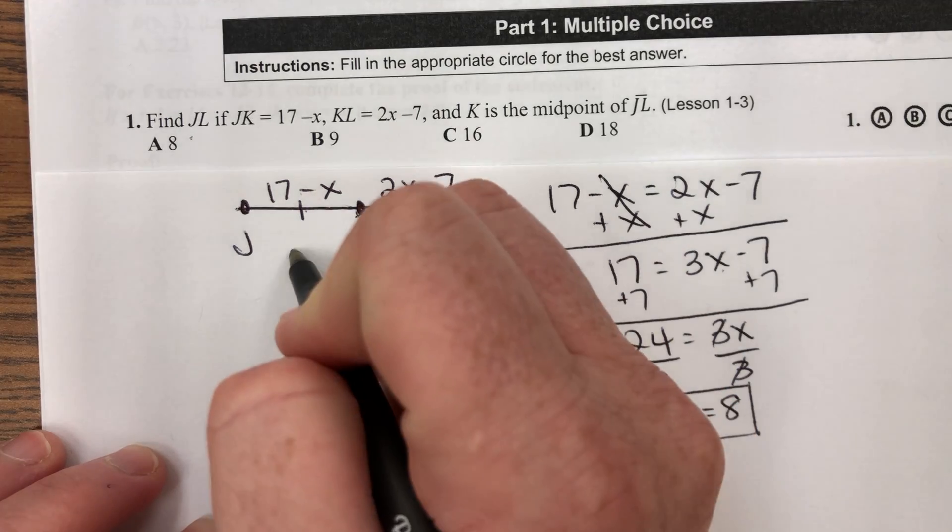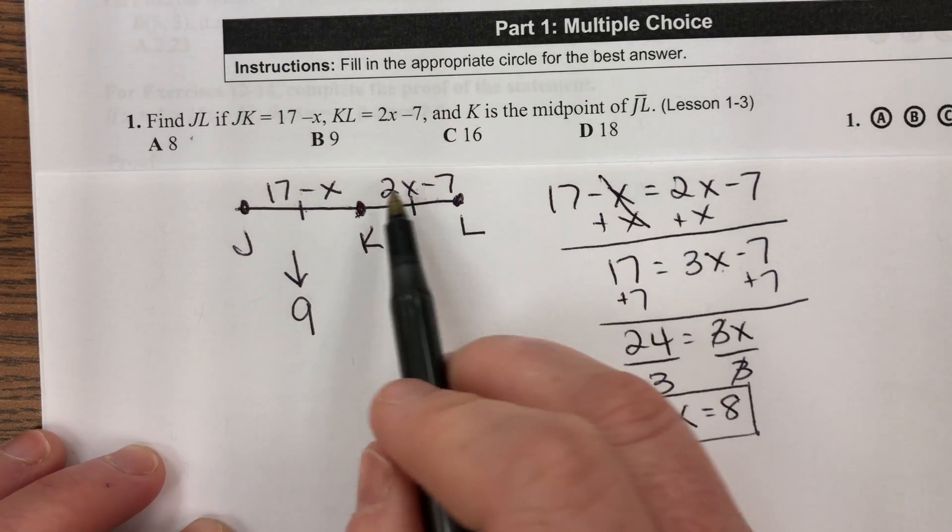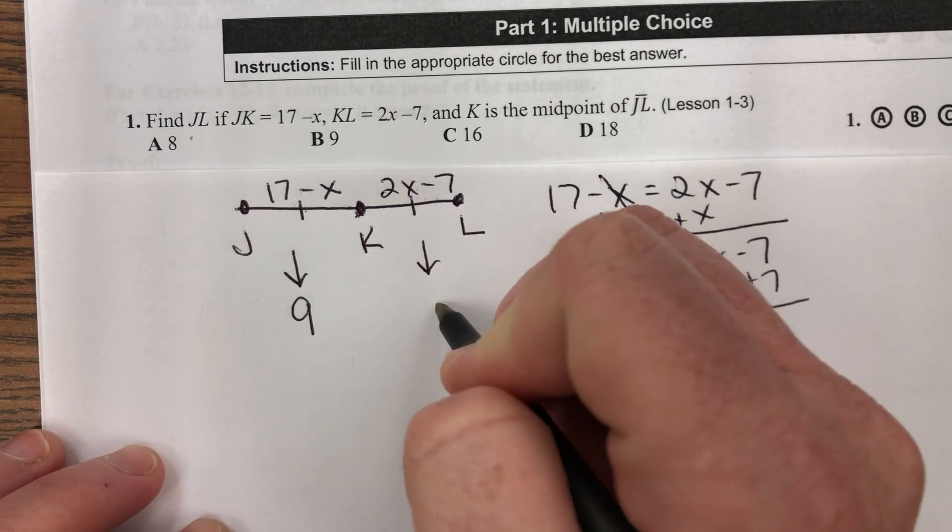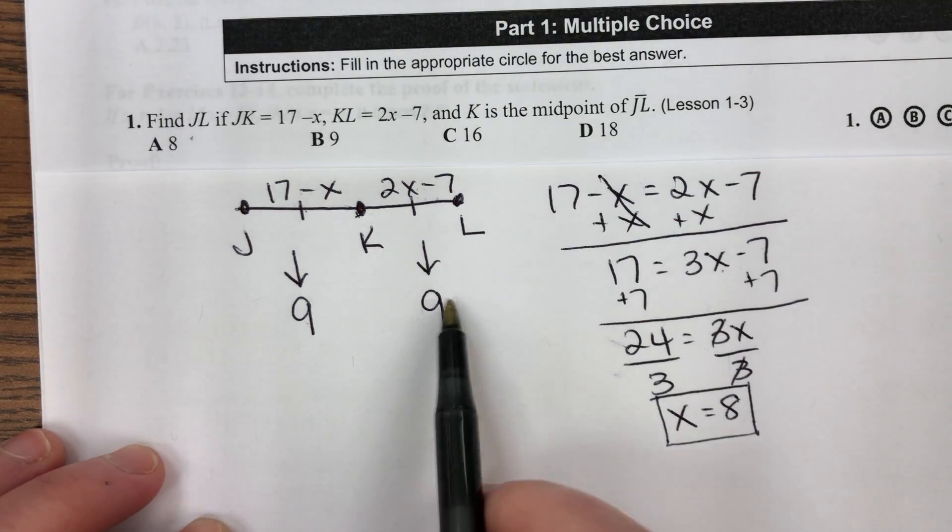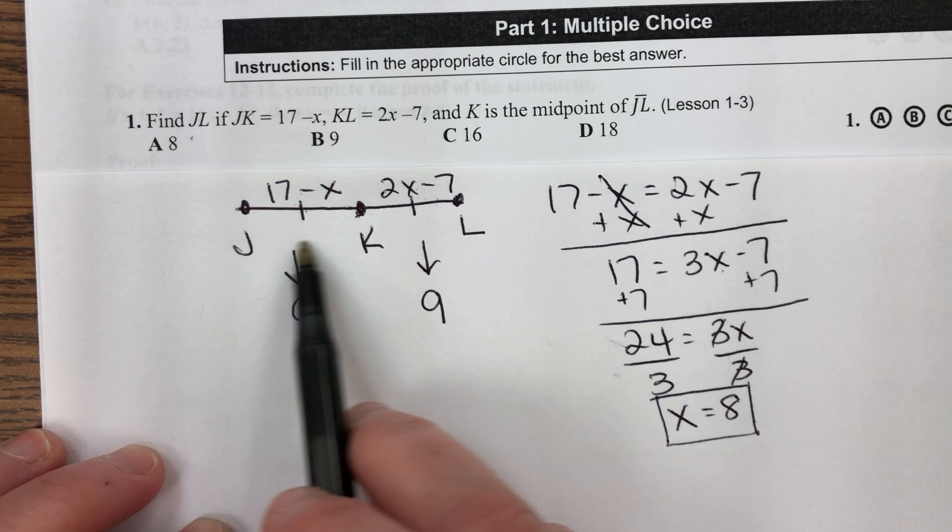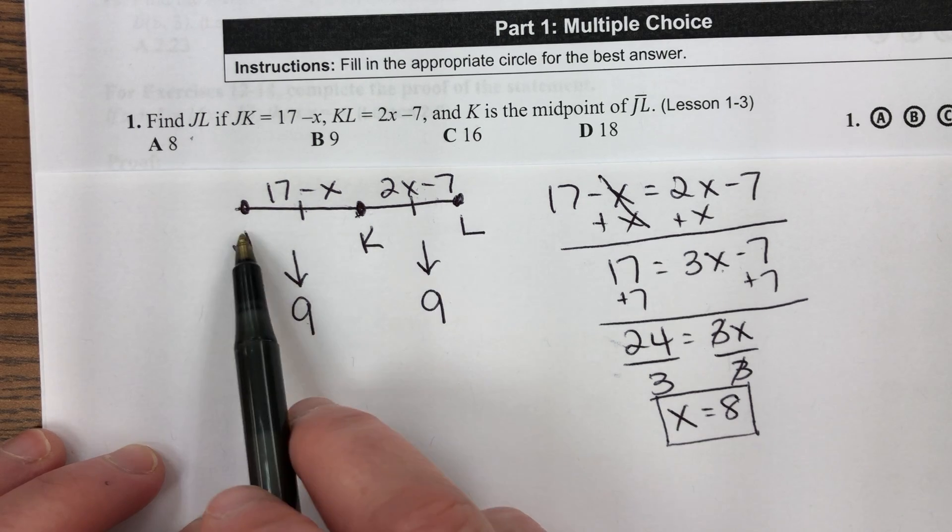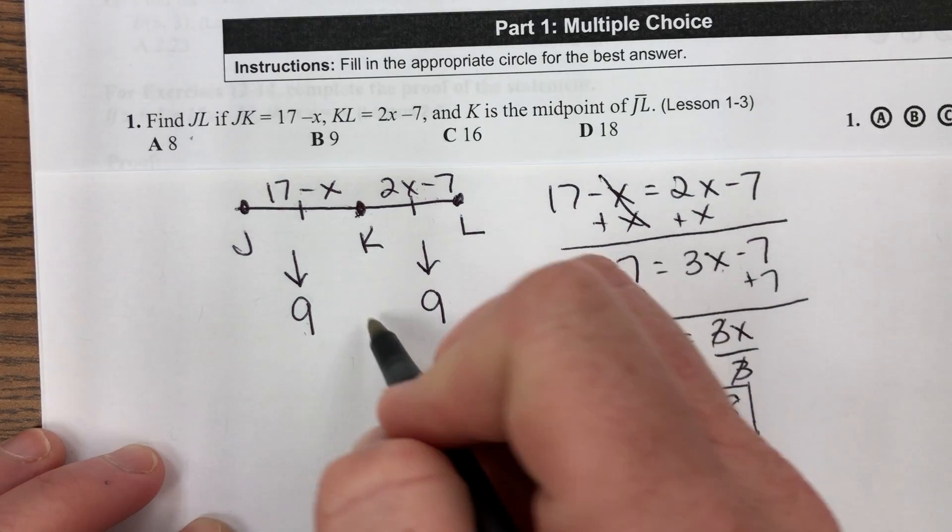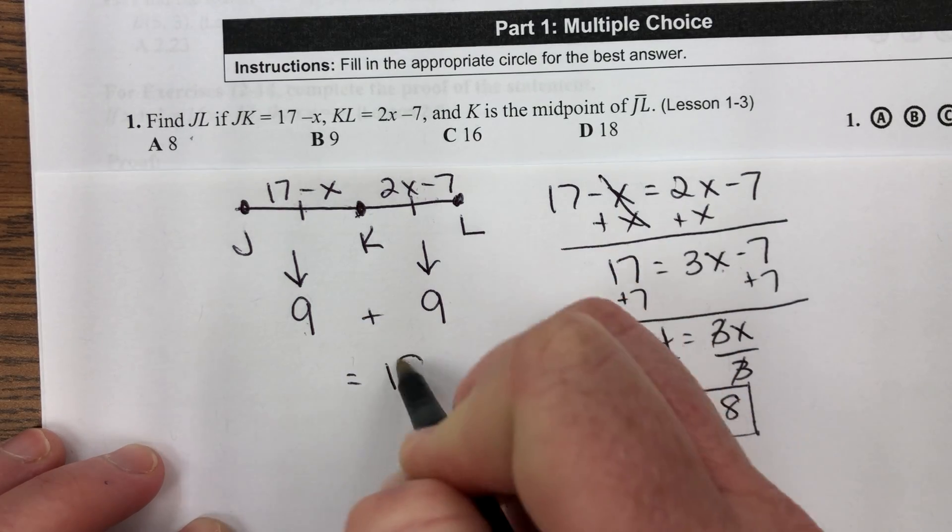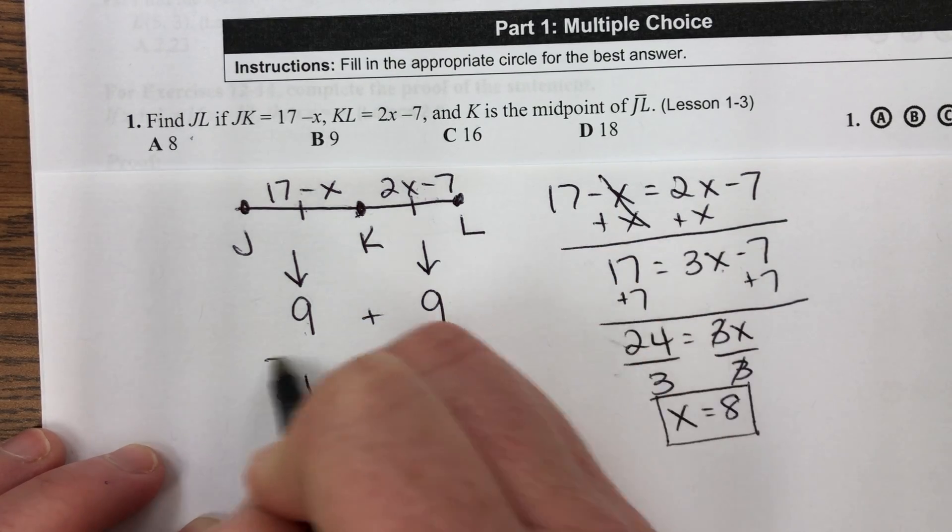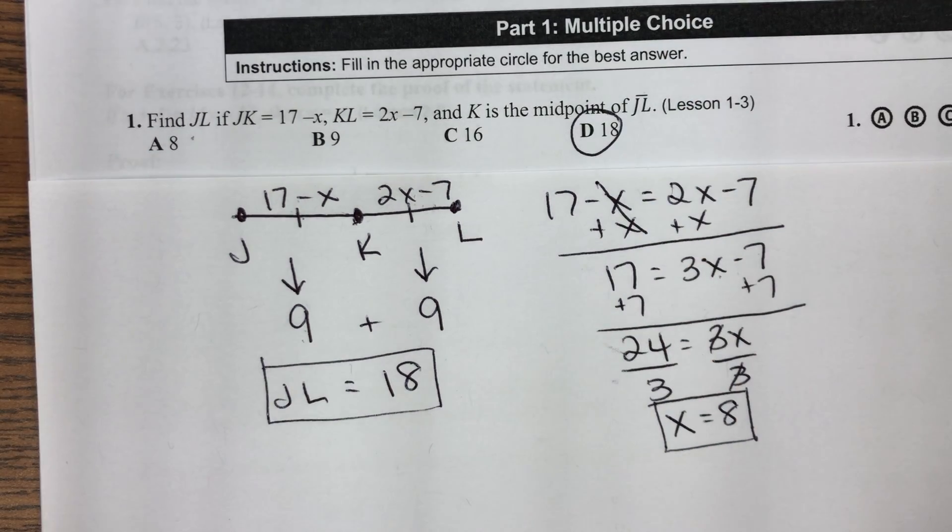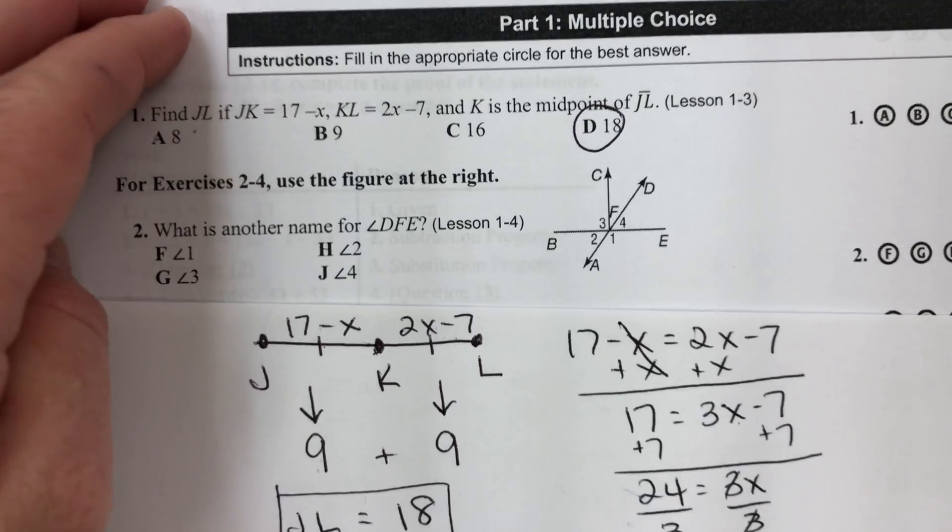Okay, well that's all fine and good, but it doesn't ask me to solve for X, right? It asks me to solve for the length of JL. So now that I know what X is, I can plug it into both of these. 17 minus 8 is 9. Two times 8 is 16, minus 7 is 9. And that makes sense because they're both equal. So the entire thing JL is made up of JK which is 9, plus KL which is 9. So 9 plus 9 equals 18. JL equals 18. And our answer choice for that is D.